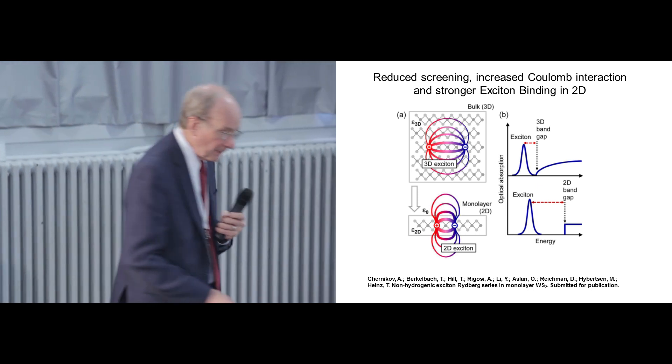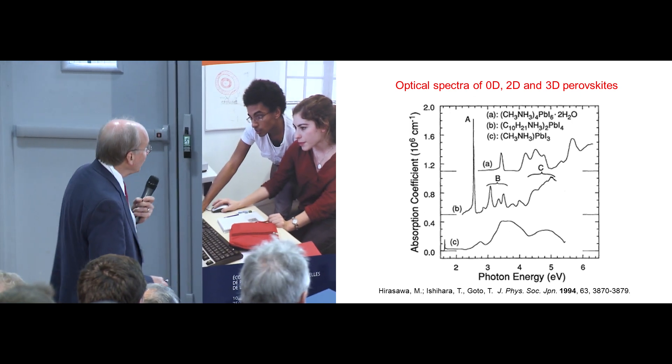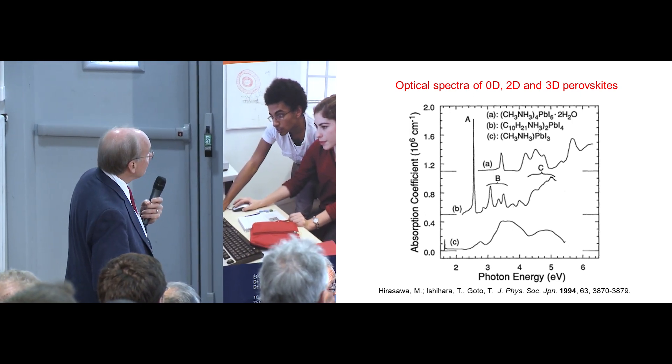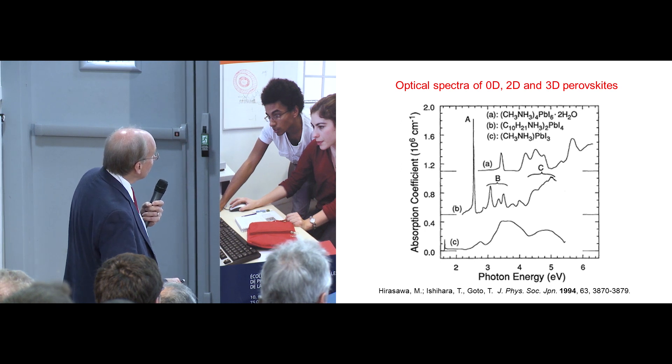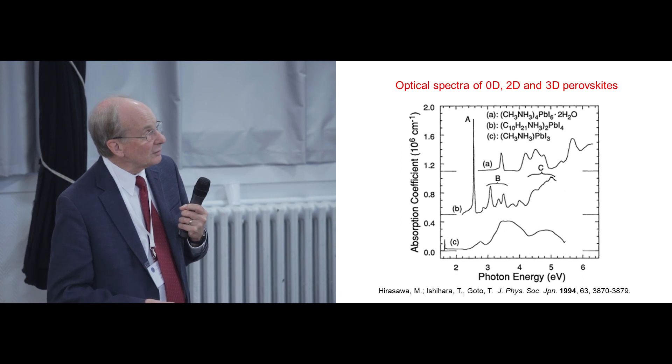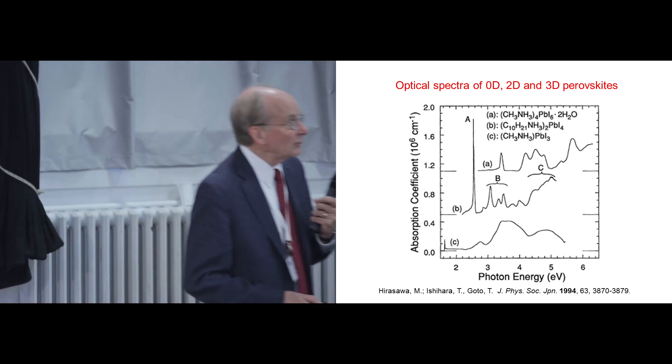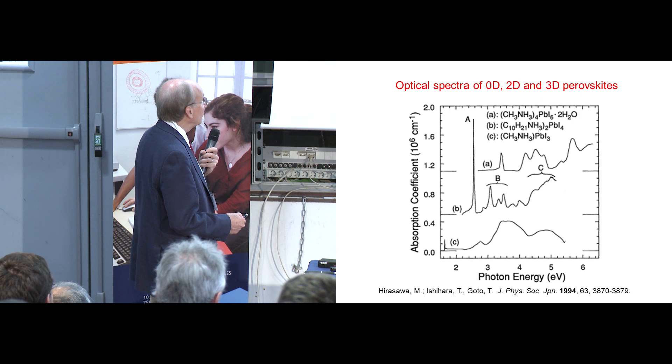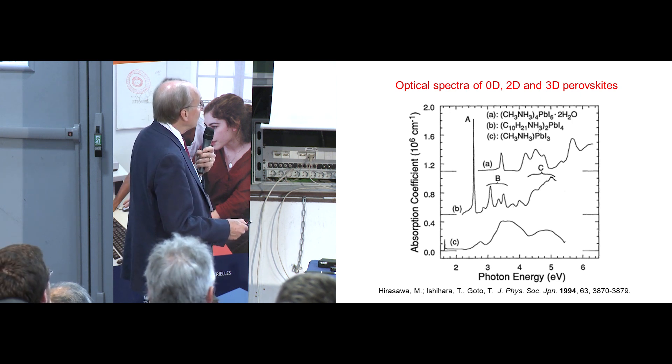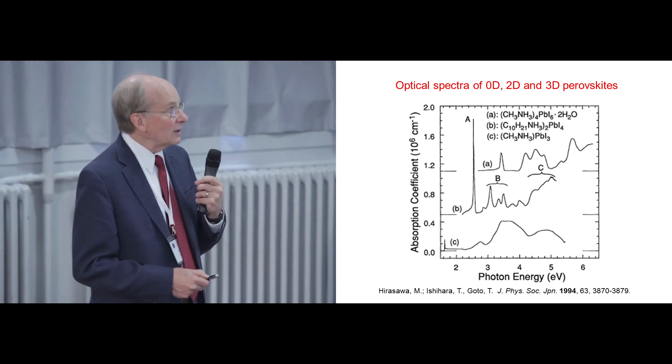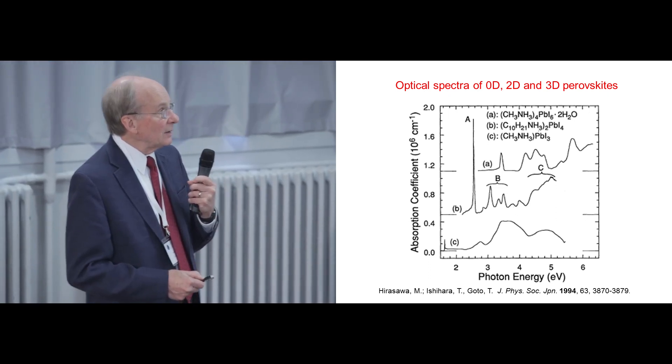That's clearly seen in the spectra. This has been known since the 1990s. Here's this Japanese paper that shows the three-dimensional optical spectra of the cubic material, the bulk semiconductor of this material versus the two-dimensional material. And so you see this three-dimensional cubic material has continuous optical bands and very weak excitonic structure at 1.6. This is a four degree Kelvin absorption spectra.